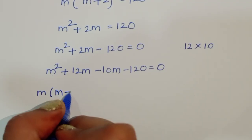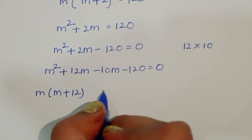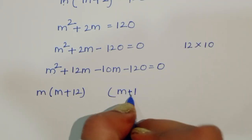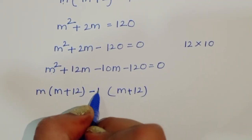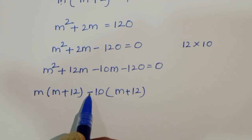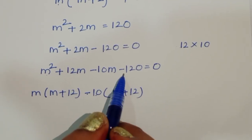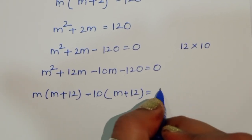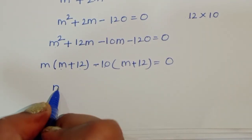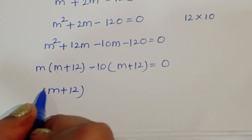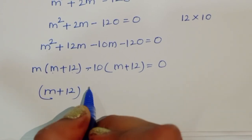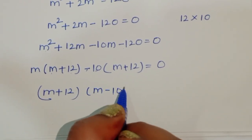So we write m² + 12m - 10m - 120 = 0. Taking common factors: m(m + 12) - 10(m + 12) = 0.